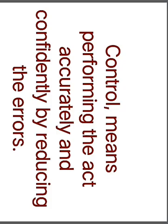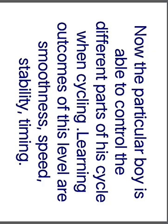Control means performing the act accurately and confidently by reducing errors. Now the particular boy is able to control the different parts of the cycle when cycling. Learning outcomes of this level are: smoothness, speed, stability, and timing.